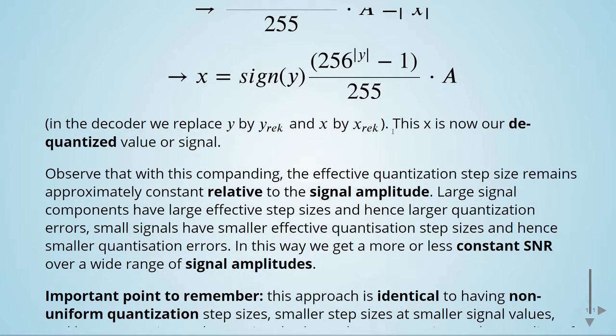Observe that with this companding, the effective quantization step size remains approximately constant relative to the signal amplitude. Large signal components have large effective step size, and hence larger quantization error. Small signals have smaller effective quantization steps, and hence smaller quantization errors. In this way, we get a more or less constant signal-to-noise ratio over a wide range of signal amplitudes.